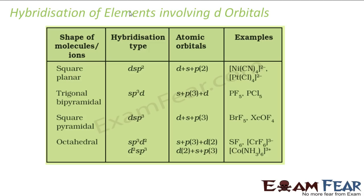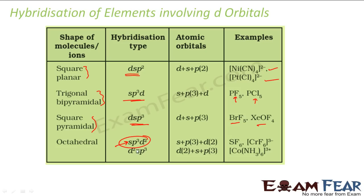We have some hybridization types involving d orbitals. DSP2 hybridization is square planar — examples are NiCN4 and PdCl4. SP3D hybridization is trigonal bipyramidal — PF5 and PCl5. DSP3 is square pyramidal — BrF5 and XeOF4. SP3D2 is octahedral — SF6, sulfur hexafluoride. D2SP3 is also octahedral.